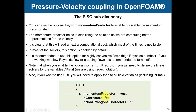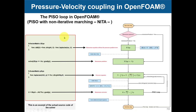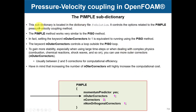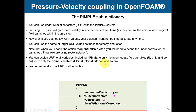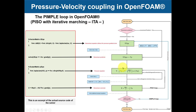Now we have the PIMPLE method — the iterative PISO, also called PISO-NITA (non-iterative) in the literature. The PIMPLE is very similar to PISO but now has a new entry: outer correctors. The PIMPLE is iterative PISO, so it has all the same options as PISO plus this new outer corrector loop.